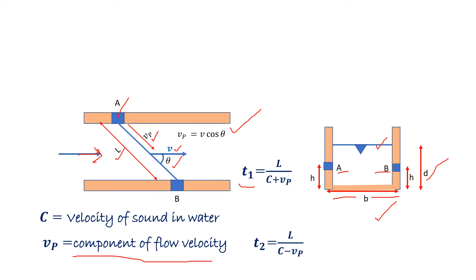Vp is component in this direction. Similarly transducer B sends a signal to transducer A and it is getting received by transducer A in time T2.